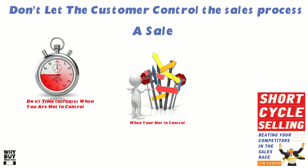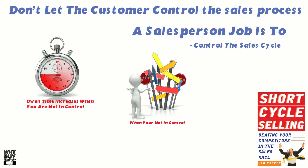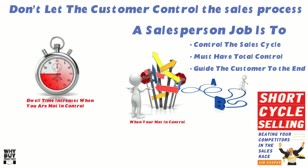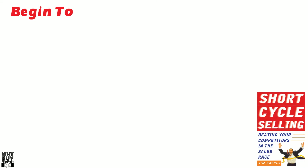To control that sales cycle, you need to have total control. In other words, you need to guide that customer to the end. Even in the sales interview, you need to guide them. And when you guide that customer through the sales process, you tend to cut the dwell times — you compress the time between interview and proposal, you compress the time between prospect and interview, between proposal and negotiation. In other words, you begin to enter negotiation every time.